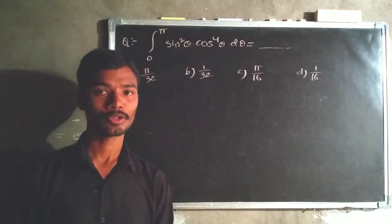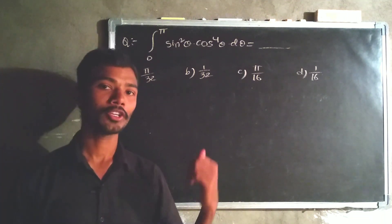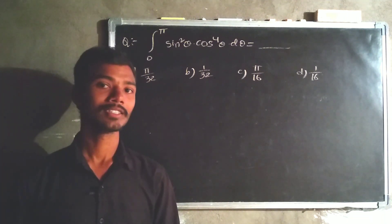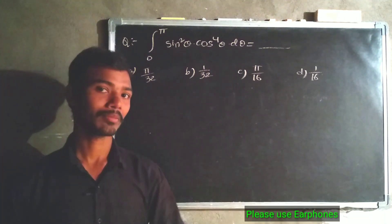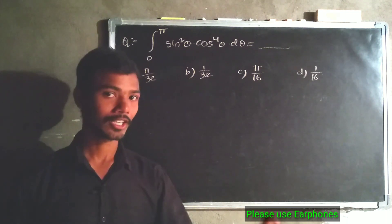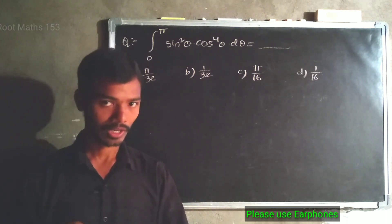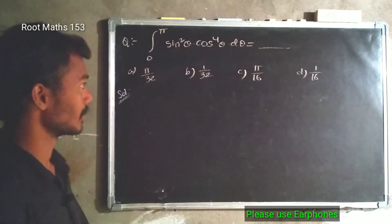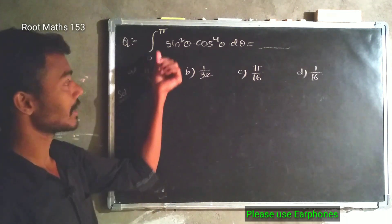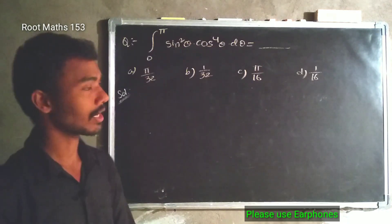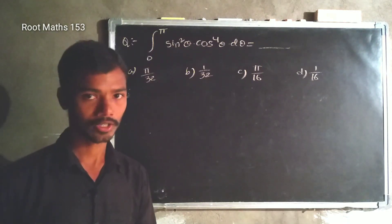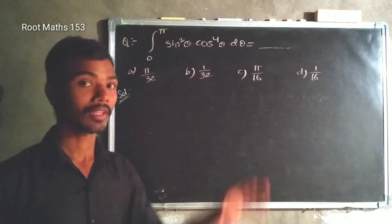Hi viewers, welcome to RootMass 153 YouTube channel. This type of question we have in the e-set and m-set. Integration 0 to pi, sin squared theta into cos power 4 theta, d theta.